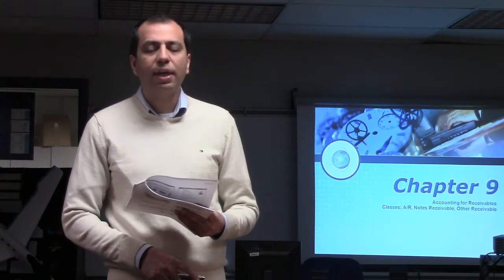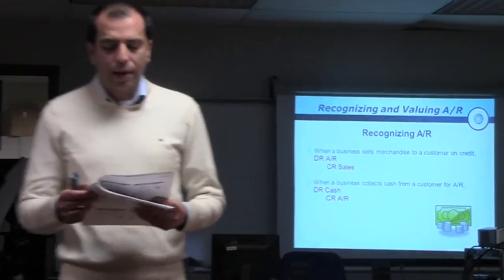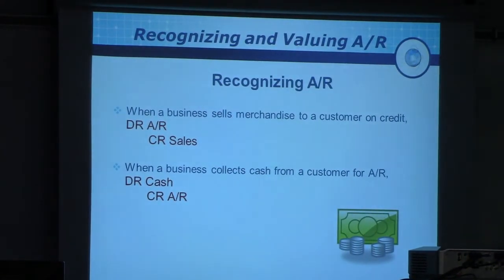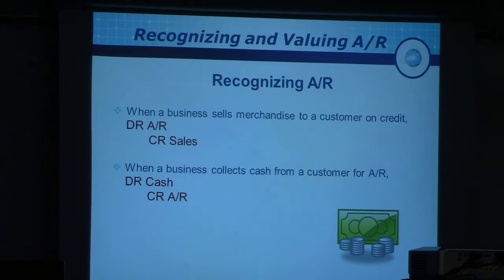The first slide talks about recognizing accounts receivables and how you do that. This is very familiar to you. When a business sells something to a customer on credit or on account, you debit AR and credit sales. When a business collects the money from that customer, you debit cash and credit AR. This is what you're used to — it's a transaction involving a customer where they're going to pay later.